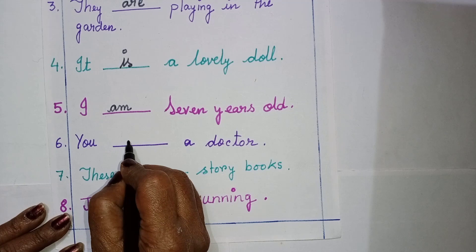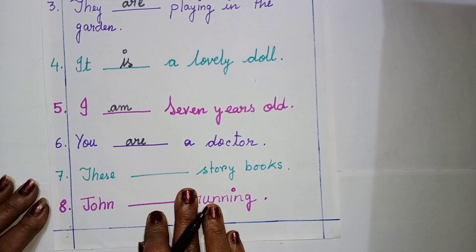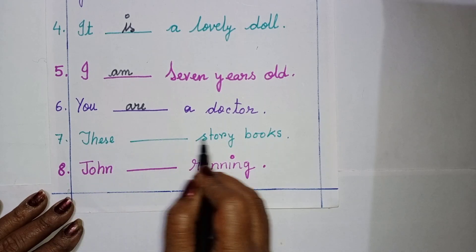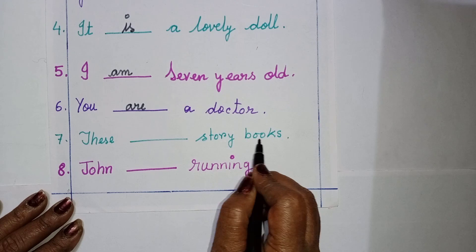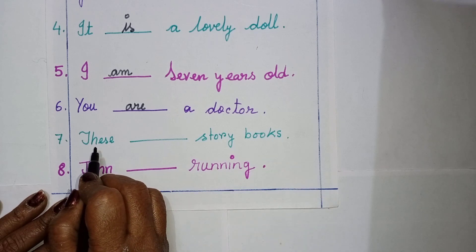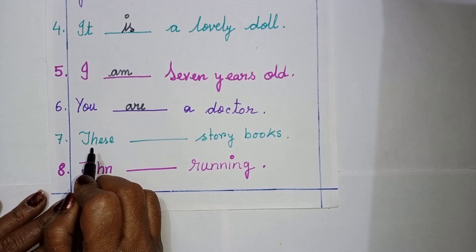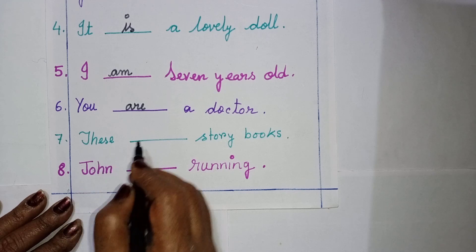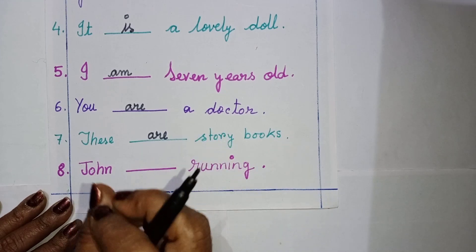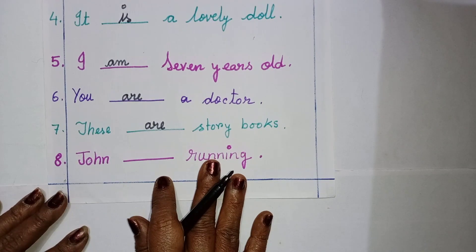Number seven: these dash story books. T-H-E-S-E — books, B-O-O-K-S — it is more than one, plural. You see the word 'these' also indicates more than one. You should emphasize this spelling. So here I have to write: these are story books. It means many books are there.